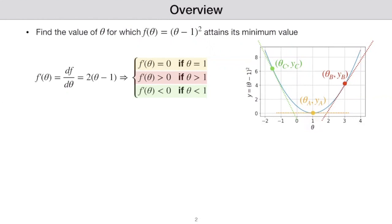You have seen in calculus one that we can actually look at the derivative of this function. So if we take the derivative, which we show here by f prime of theta or df over d theta, this would be two times theta minus one. And if we set this equal to zero to find critical points, you can see that the derivative is zero at theta equals one. The derivative also tells us the slope of the tangent line, and you can see that the slope of the tangent line is zero. In this simple case, we can see that this is the minimum value.